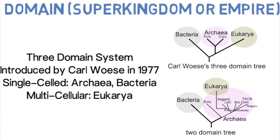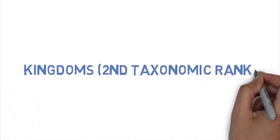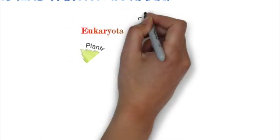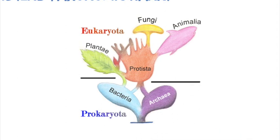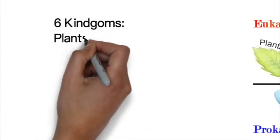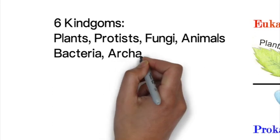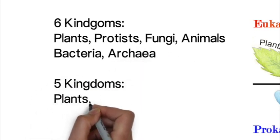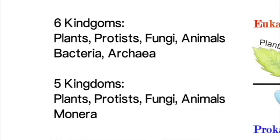The second ranking in the taxonomic classification system is kingdom. Kingdoms are usually broken down into five or six — five in some parts of the world, six in the United States for most textbooks. Eukaryotic kingdoms include plants, protista, fungi, and animals. Prokaryotic kingdoms are bacteria and archaea. In a five-kingdom system, bacteria and archaea are combined into monera, a word describing prokaryotic organisms.